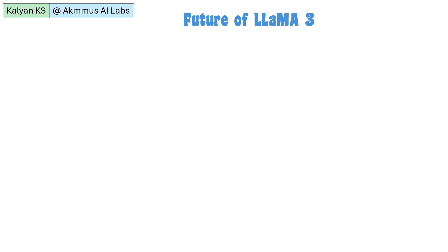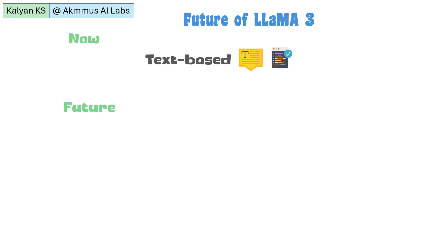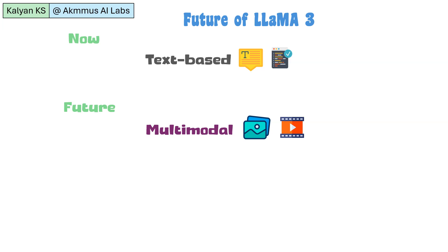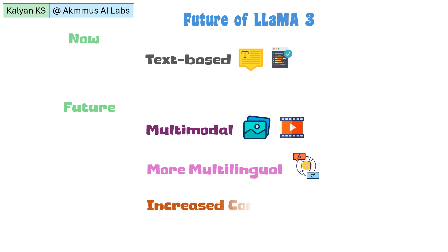Now, let us see what we can expect in the future from Llama 3 models. As of now, Llama 3 models are text-based, meaning they can process and generate text and code data. In the future, we can expect Llama 3 models to be multimodal, handling and generating image and video data. Llama 3 models may also be extended to support more languages, and we can expect an increased context length so that the models can process long documents.